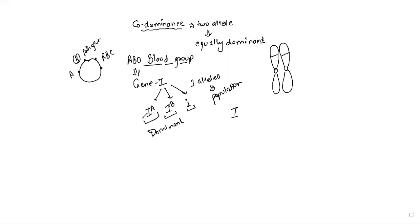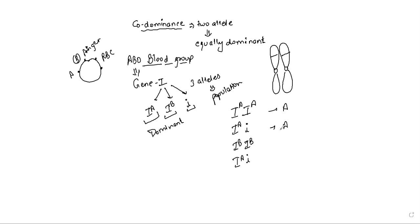First, I^A can be present homozygously (I^A I^A) or heterozygously with small i (I^A i) — both have the same phenotype because small i does nothing and I^A is dominant, so expression A comes. Both individuals carry blood group A. For I^B, similarly I^B I^B or I^B i — expression of I^B comes, so blood group B.